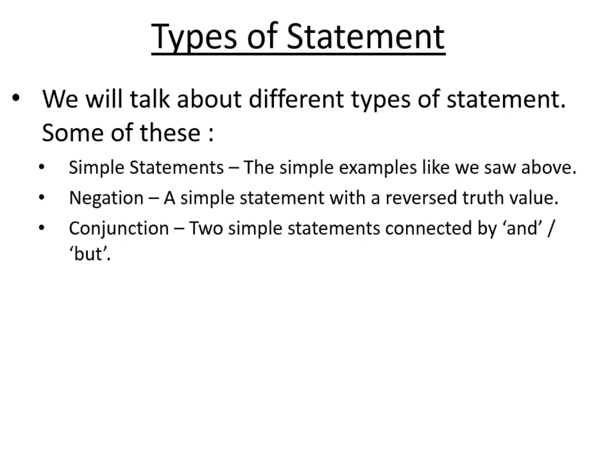Next we have the conjunction, which is two simple statements connected by and or but. So for example, I am coming but Alice isn't is a conjunction. And in fact, there's a negation in there too. You might be able to spot I am coming but Alice is not coming. So that's actually a conjunction with a negation thrown in as well. Or I am going to play tennis now and then football later. That is also a conjunction using and.